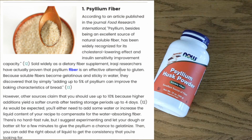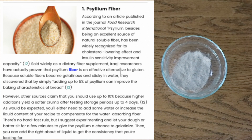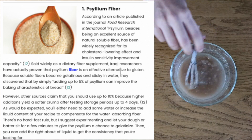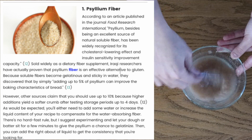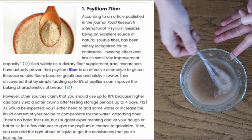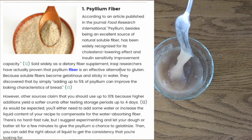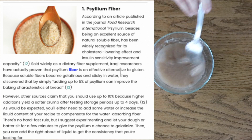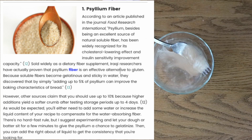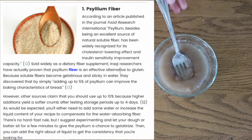Psyllium husk fiber is used very commonly in keto breads that are aiming for more of that sourdough or rustic bread texture, which is really difficult to get using eggs as the main thickener. Psyllium husk is made similarly to oat fiber — it's the husk of the psyllium seed ground down and is just pure fiber. The big difference is that if you add water to it, it gels up — instead of just absorbing the water, it actually forms a gel substance. If you add enough water and then heat it up, the texture is extremely elastic, just like gluten.